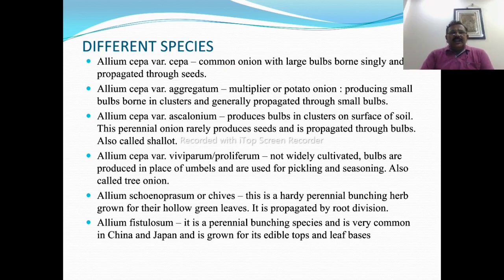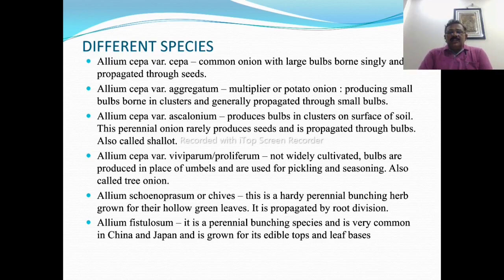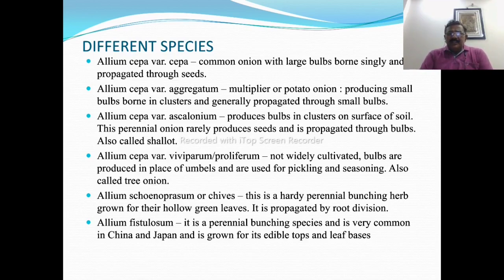Different species are found in onion. Allium cepa variety cepa is the common onion with large bulb, pungent, and propagated through seeds. The next one is Allium cepa variety aggregatum, the multiplier onion or potato onion, producing small bulbs in clusters and generally propagated through small bulbs.